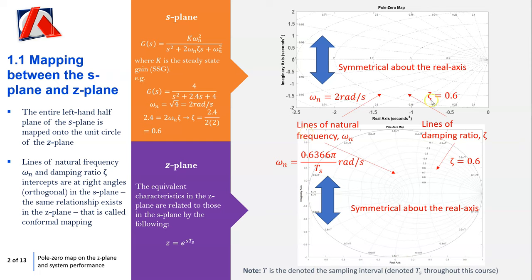In this case, the ζ value equals 0.6 — the damping ratio — and you can see how it maps into the z-plane. You'll see the damping ratio values: 0.9, 0.8, 0.6, 0.5 — decreasing as you go away. The value of ζ on the unit circle is 0, which corresponds to the imaginary axis on the s-plane, giving a marginally stable system that continually oscillates. The lines of natural frequency correspond to this line here at 2 rad/s, and natural frequency is a function of the sample interval. We'll talk about this more in a few slides.